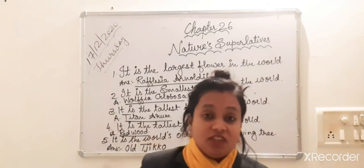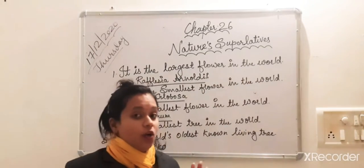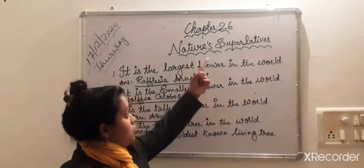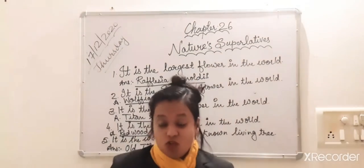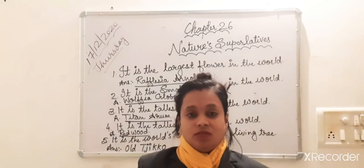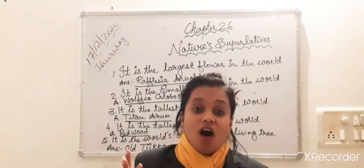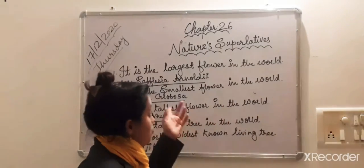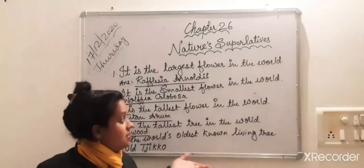Now we are talking about superlative. Superlative means we use the word super - very nice, beautiful, wow, best. So we are going to talk about something different today.